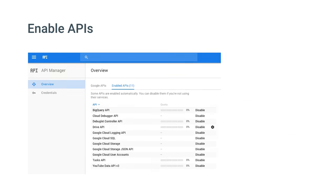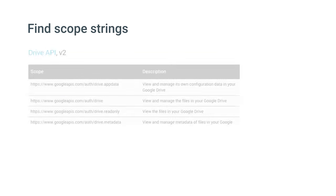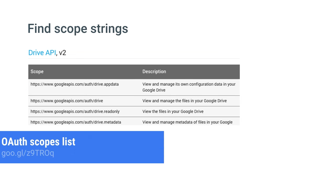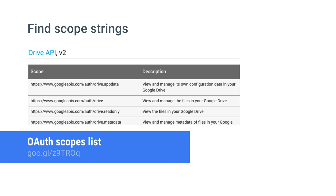In order to use the Google APIs, you have to enable them from the developer console. Then, looking at this page, you can find the scope strings that correspond to the APIs you have enabled. Each one of these represents an API, so take note of the ones you need.